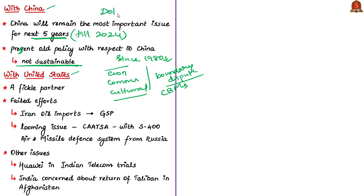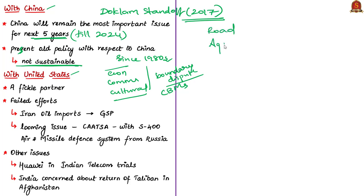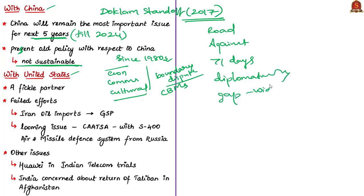We could see the Doklam standoff between the two countries in 2017. Doklam is a place in Bhutan where the Chinese army was about to build road infrastructure. Bhutan and India were strongly against it, and after 71 days the standoff was resolved diplomatically. The author feels that the gap between India and China is growing and there have to be steps taken to address it.